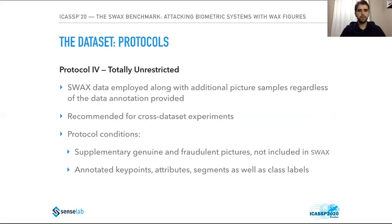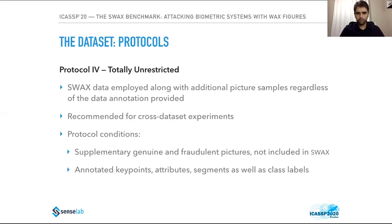Protocol four endorses the use of SWACS data as well as additional picture samples regardless of data notation provided, and you can also use other datasets to learn your algorithm. The totally unrestricted protocol is the most permissive, admitting outside datasets, external feature extractors, and other methods built on independent visual data. Supplementary genuine and fraudulent pictures must not be available in the SWACS dataset — no corresponding identity overlap — and external face samples may include annotated key points, attributes, segments, and information carrying bona fide or counterfeit labels.